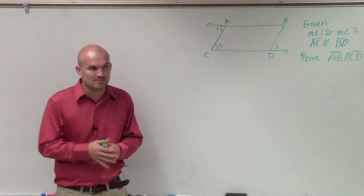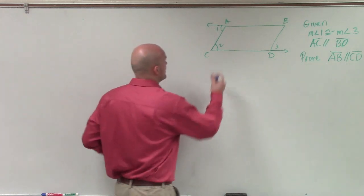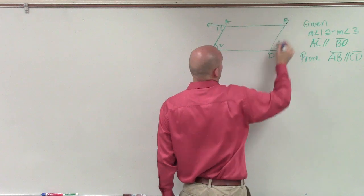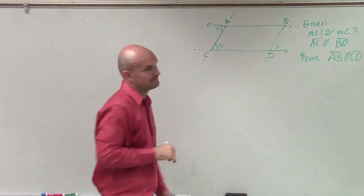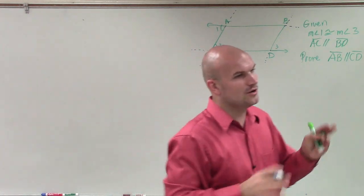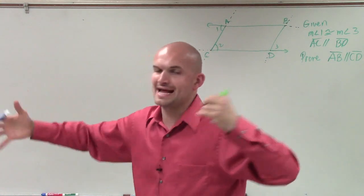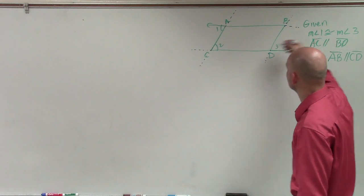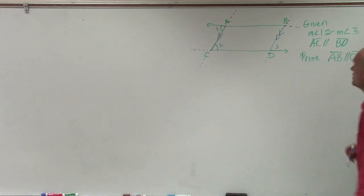Now, there's one thing I want you guys to remember: when we're talking about parallel lines and transversals, even though we have line segments up here, we can extend these to help us think about what this is. Sometimes I like to just extend these so that helps me visualize alternate interior angles and so forth. They tell us AC is parallel to BD, and we know that measure of angle 1 and measure of angle 3 are congruent.